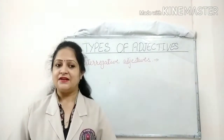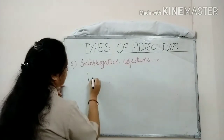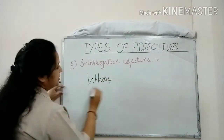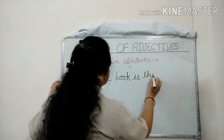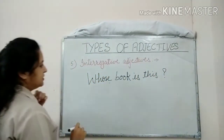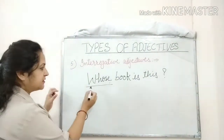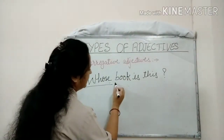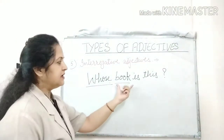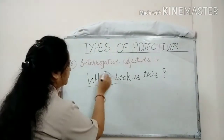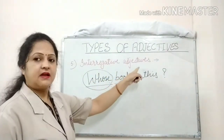Let's take some examples. The first example is: 'Whose book is this?' Here, 'whose' is an interrogative pronoun. But this interrogative pronoun is followed by the noun 'book'. So, as the interrogative pronoun is followed by a noun, it is now functioning as an interrogative adjective.